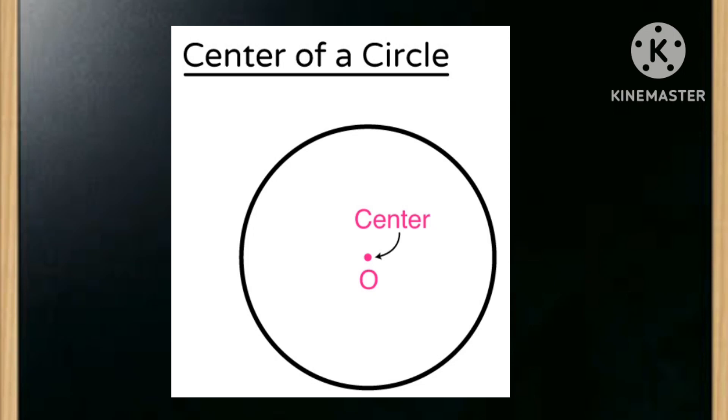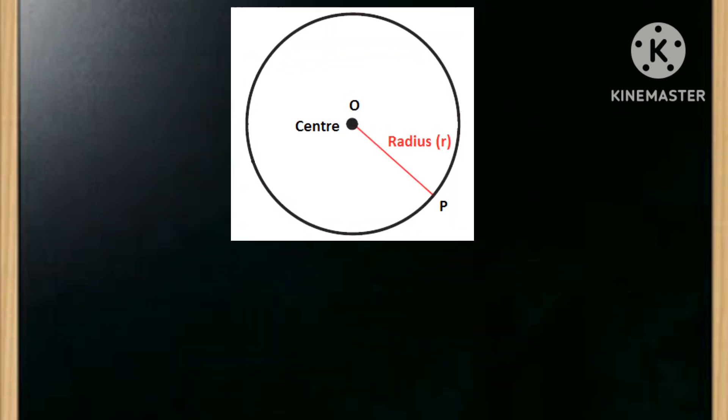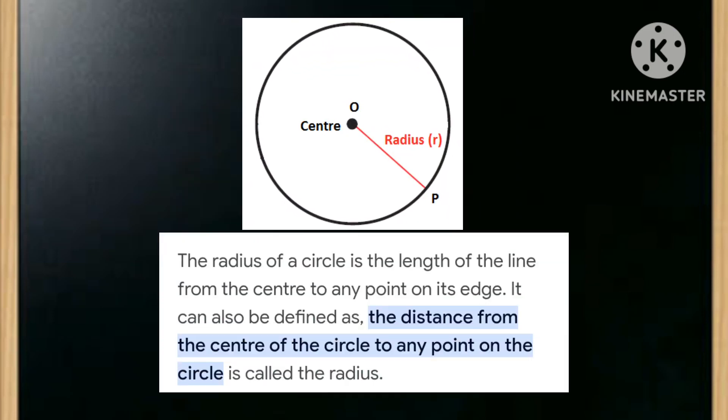What is the radius of a circle? The radius of a circle is the length of the line from the center to any point on its edge. It can also be defined as the distance from the center of the circle to any point on the circle is called the radius.